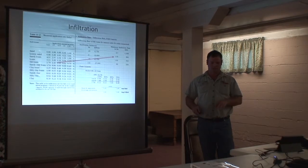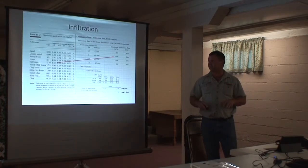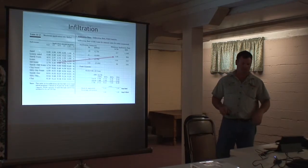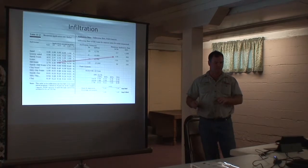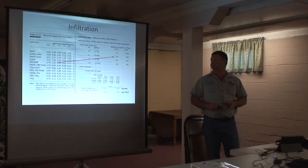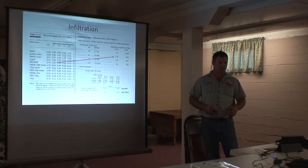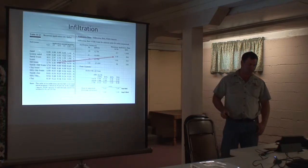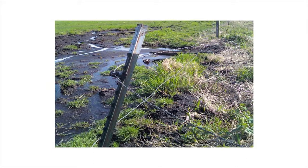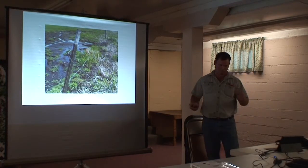Understanding that the soil type, structure, and vegetative practices all play into pieces of the infiltration rate — how much you can apply — is important for designing a system: sizing pipes, sizing pumps, getting those pieces worked into the system for applying manure and irrigation water efficiently for the producer's yield goal. If you have runoff, it can go downhill and cause a problem.